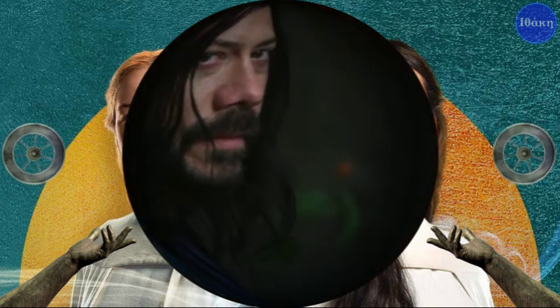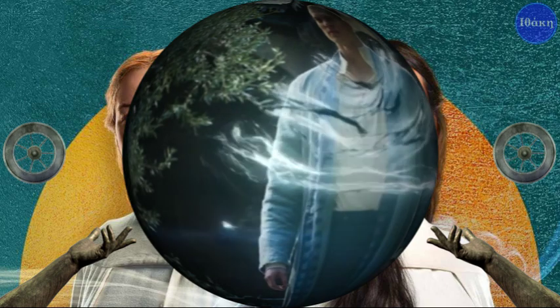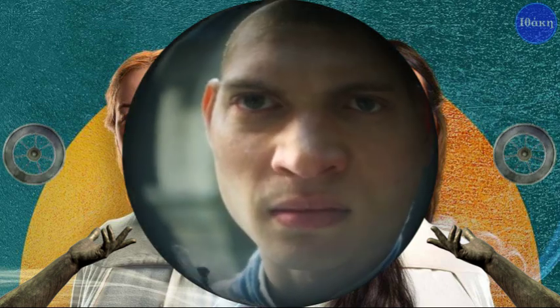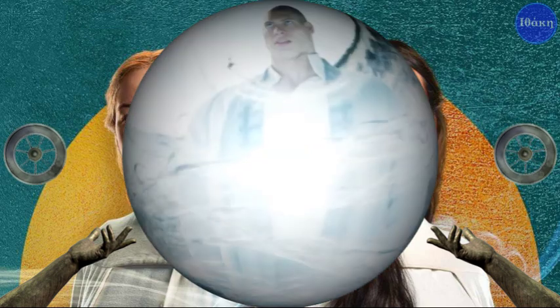Here, Logain takes his first steps into teaching the Dragon Reborn how to channel. As Rand learns through a different path in the books, I wonder, will Logain only teach him the basic principles, or will he become his main mentor? Will Asmodean appear later to do his part in this matter? We'll have to wait.